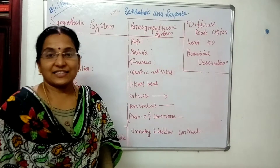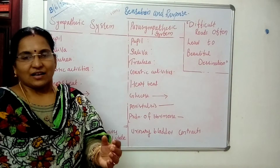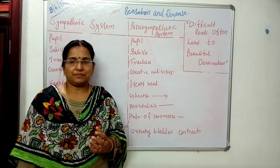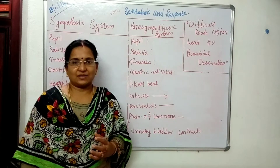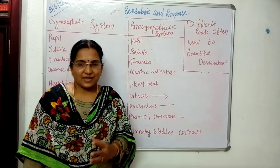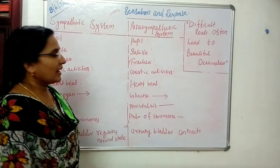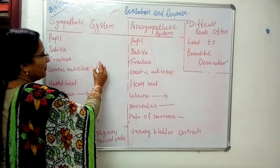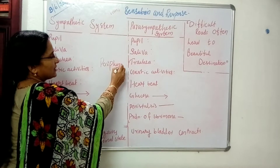In such situations, which part of our nervous system is there to control and coordinate? You have studied that the central nervous system consists of the brain and spinal cord, and the peripheral nervous system.